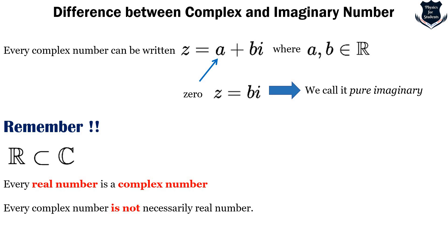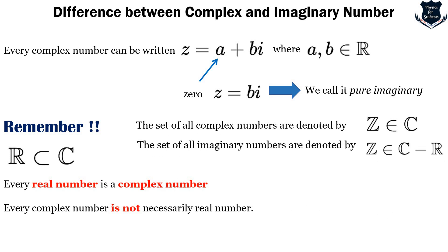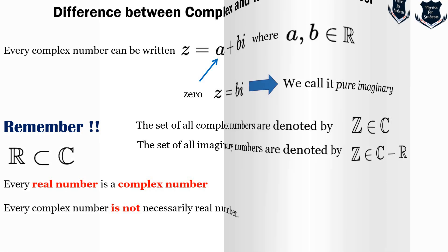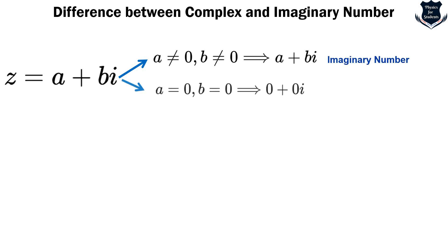This is a very important point to remember. The set of all complex numbers is denoted z ∈ ℂ, and imaginary numbers are a subset of the real number line. For z = a+bi: if a ≠ 0 and b ≠ 0, then a+bi is called a complex number.